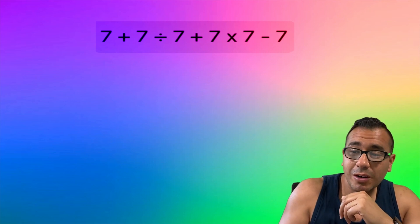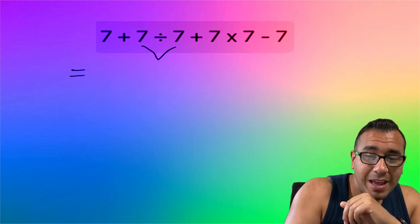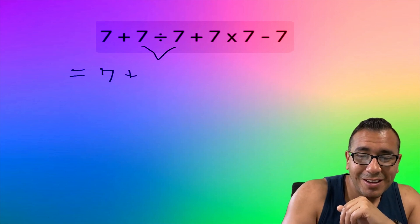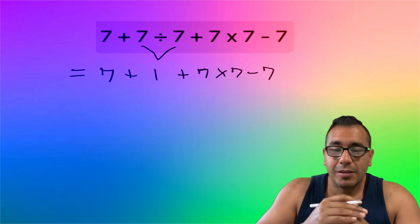So here from left to right we see the division first, so we're going to go ahead and divide these sevens. That's our first step. Everything else you're going to drop it like it's hot - you're not doing anything with the rest. So 7 divided by 7 is 1. Everything else I'm going to copy it the way I see it. So there's our first step.